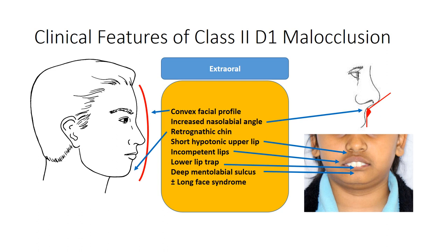The extraoral clinical features of Class 2 Division 1 malocclusion include a convex facial profile, an increased nasolabial angle, a retrognathic chin, a short and hypertonic upper lip, incompetent lips with lower lip trap, a deep labiomental sulcus, and a long face with increased vertical facial proportions.